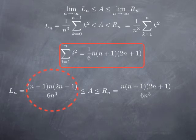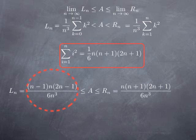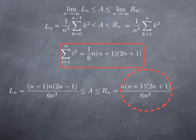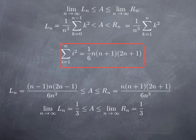Now we want the limit of these expressions as n goes to infinity. Each is a polynomial in n over another polynomial in n. For Lₙ, the numerator is degree 3 with leading coefficient 2 (giving 2n cubed), and the denominator is 6n cubed, so the limit is 2 over 6, which is 1/3. Similarly for Rₙ, the leading coefficient at the top is 2 and at the bottom is 6, so the limit is also 1/3. Therefore, a is between 1/3 and 1/3, which means a equals 1/3.